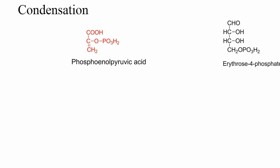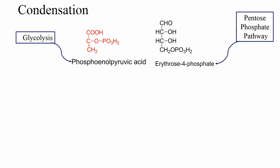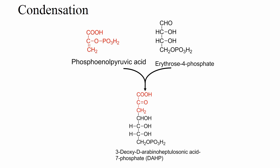Now coming to the reactions of Shikimic Acid Pathway. The pathway begins with condensation of Phosphoenolpyruvic Acid and Erythrose 4-Phosphate. Phosphoenolpyruvic Acid comes from glycolysis, whereas Erythrose 4-Phosphate comes from the Pentose Phosphate Pathway. Erythrose 4-Phosphate is an intermediate product of the Pentose Phosphate Pathway. The condensation results in the formation of a 7-carbon compound called 3-deoxy-D-arabino-heptulosonic acid 7-phosphate, abbreviated as DAHP.